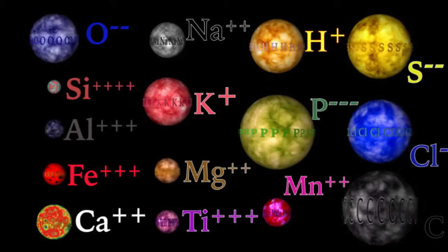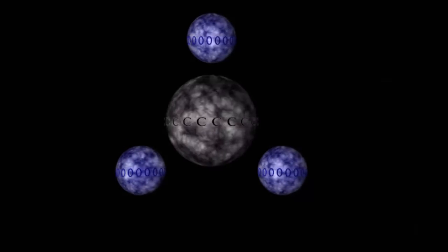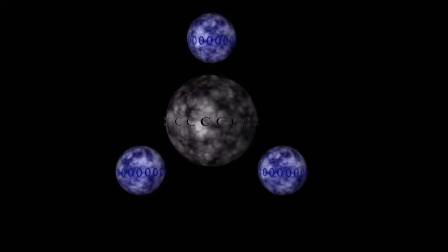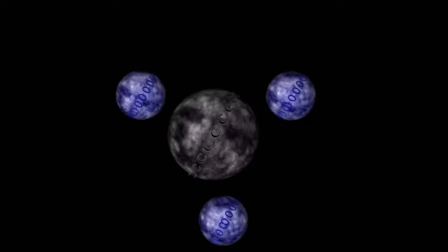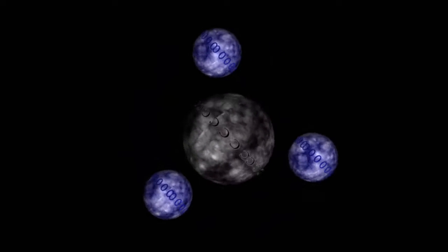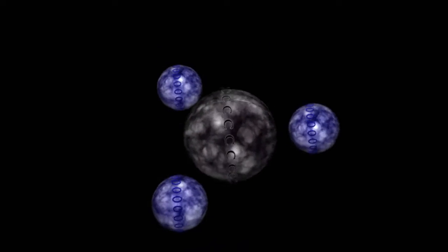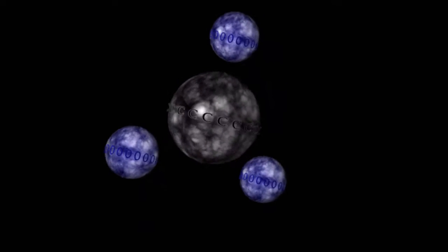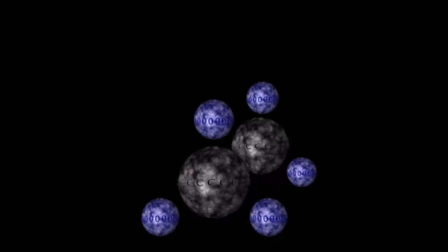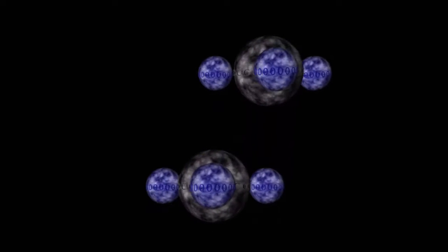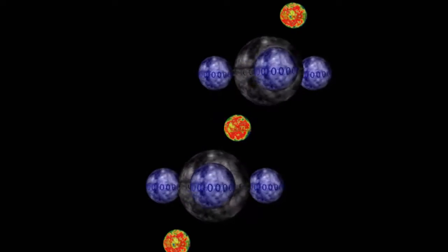Put oxygen and carbon together and they form the CO3-2 complex anion — a triangular molecule with oxygens at the corners and a carbon at the center. This complex anion and a +2 cation will neutralize and crystallize our carbonate minerals.